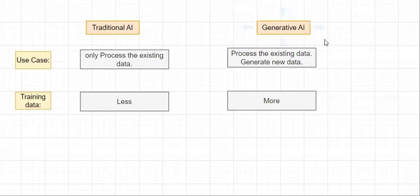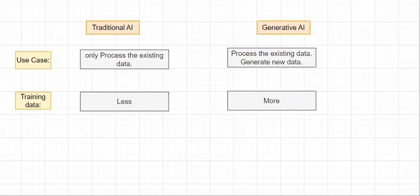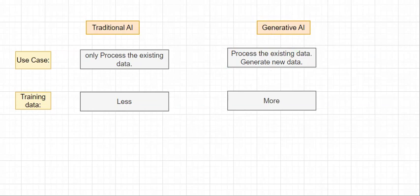Generative AI generates new data by identifying the trends and patterns in the training data provided to it. This is achieved using neural networks and Transformer architecture — neural networks act like a human brain for Generative AI, computing and grasping all the training data, and then generating new content by identifying new patterns and trends.